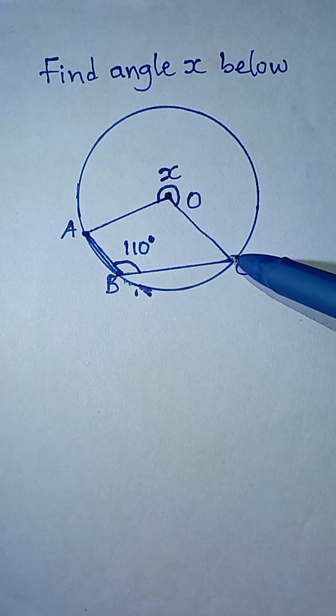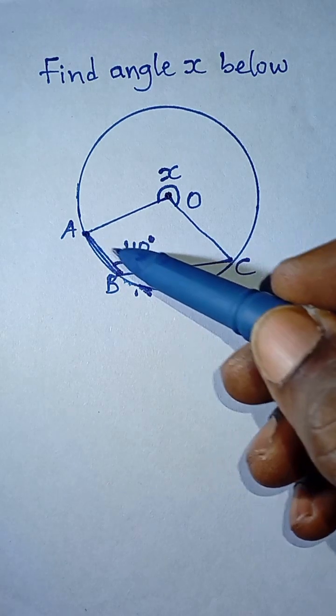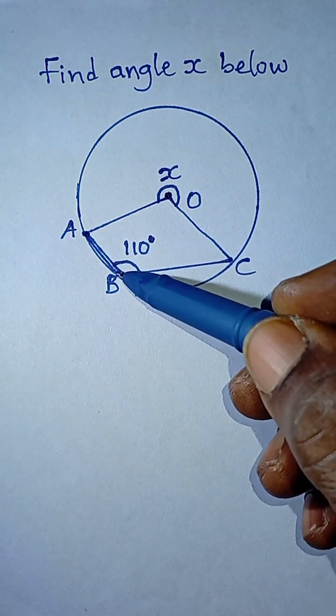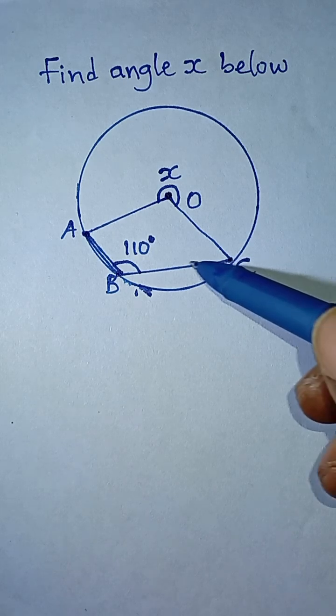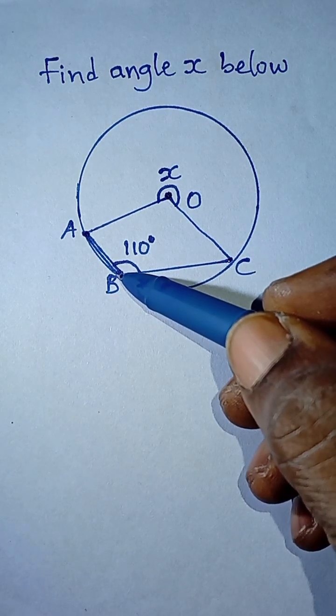Now in the same way, another line starts from A and moves to the circumference at B. Another line again starts from the same point C and moves to the circumference B.